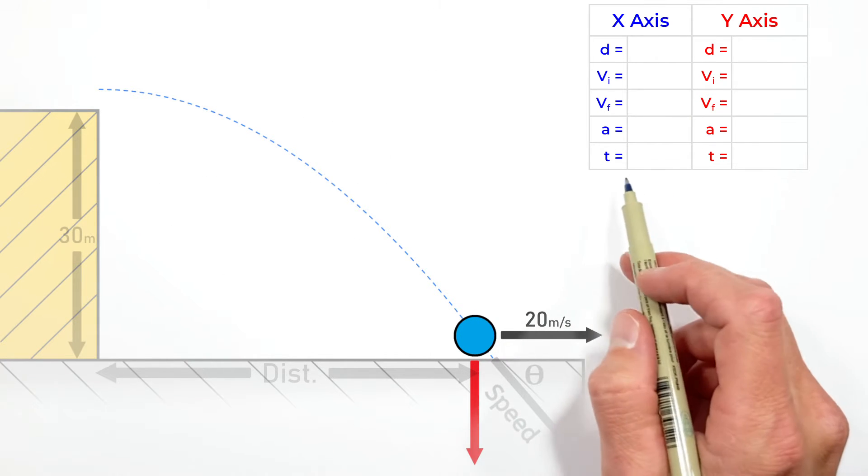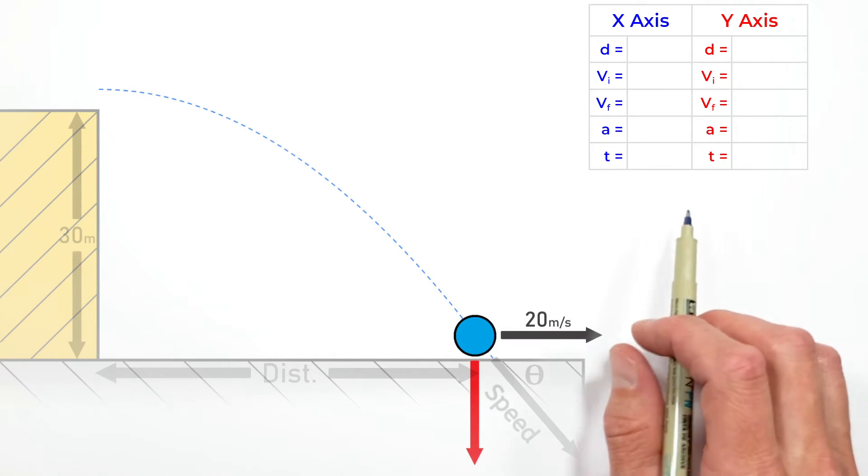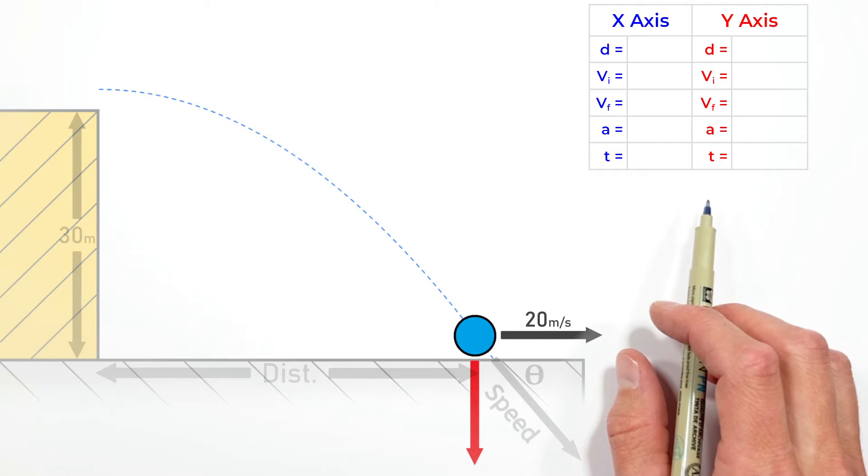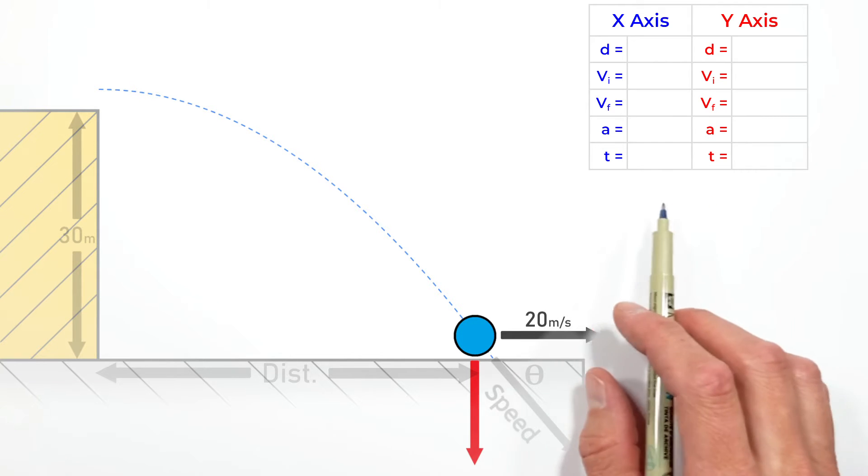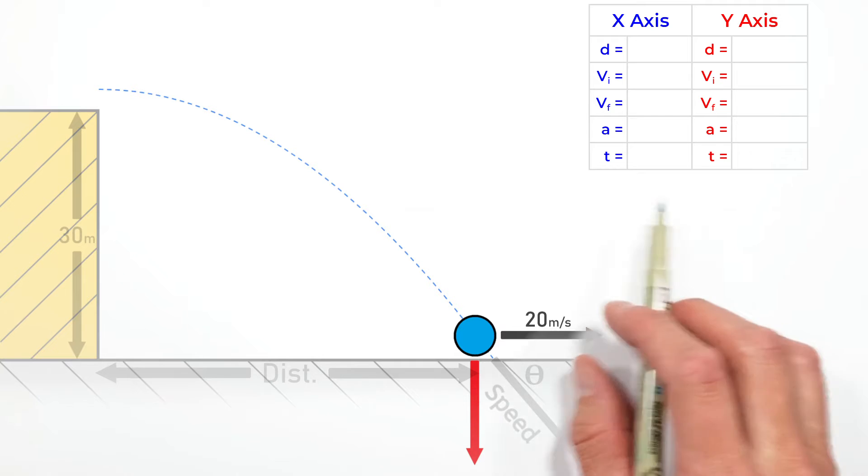The biggest issue in dealing with projectile motion is making sure we keep these two axes separate from one another. I always tell my students it's a bit like your wife and your girlfriend - you've got to keep them completely separate, don't get them mixed up.